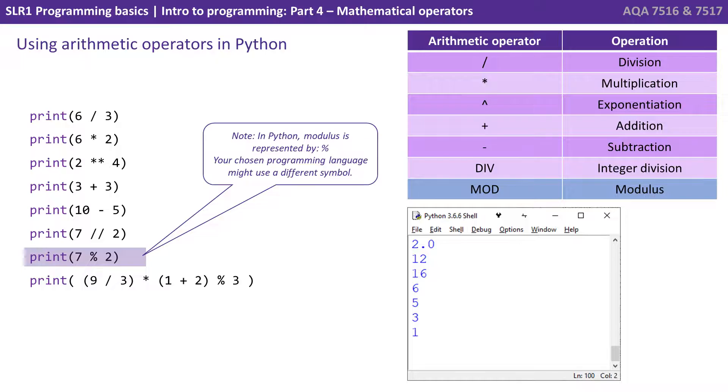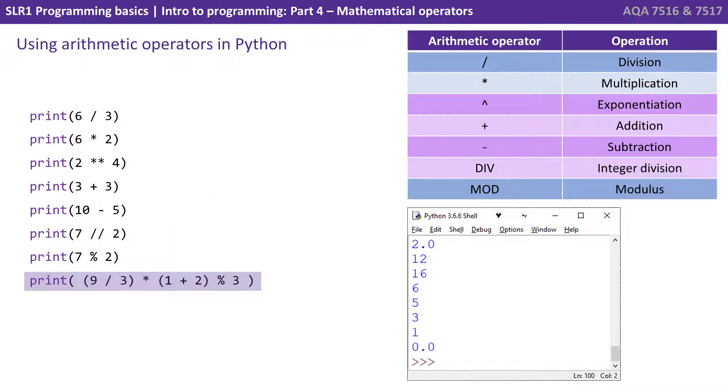And in different languages, this may be represented with a different symbol. Now we have 7 modulus 2, that's giving us 1, and in Python modulus is represented by the percent symbol. And then we can see how we can compound or join together different arithmetic operators by using brackets, just like you do normally in maths.